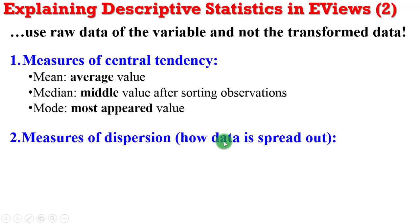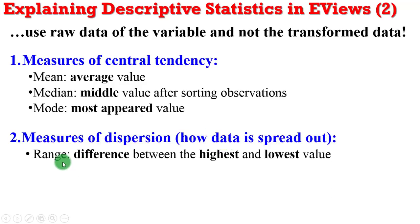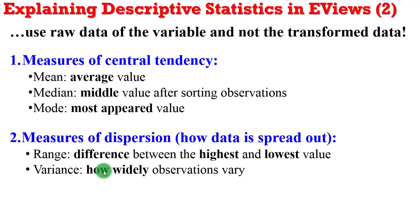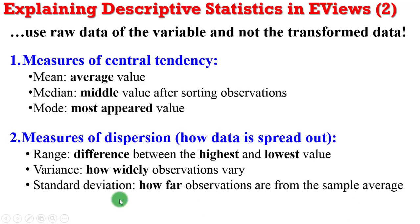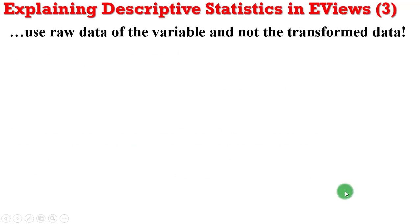On the measures of dispersion, you need to know how spread out your data is. Looking at the range, which is the difference between the highest and the lowest value — the variance tells you how widely dispersed the observations are, while the standard deviation tells you how far the observations are from the sample average. Use the raw data of the variable and not the transformed data.